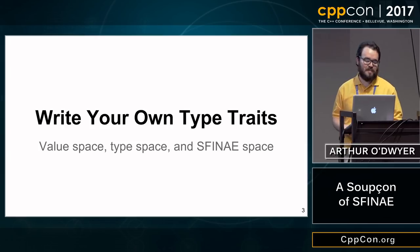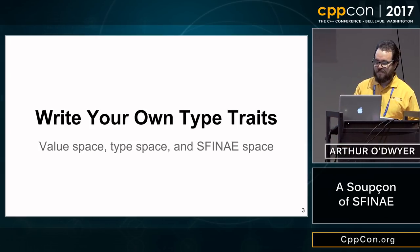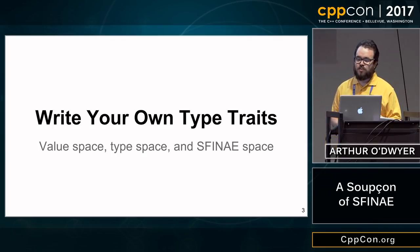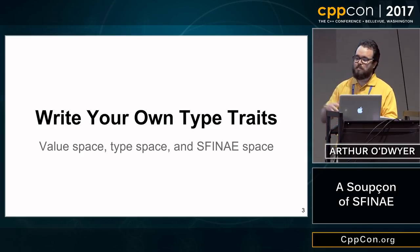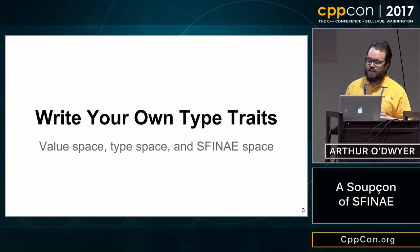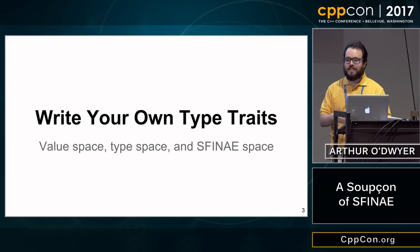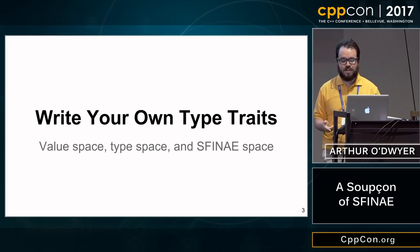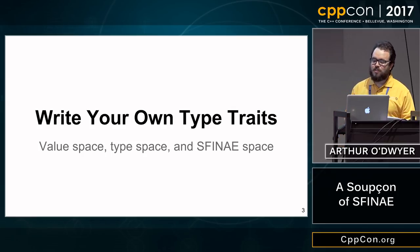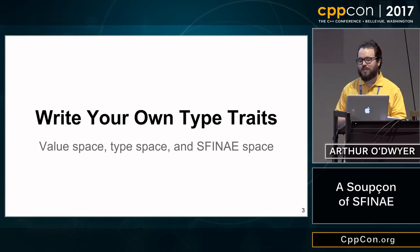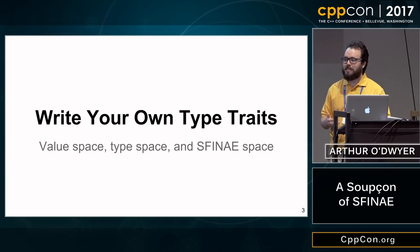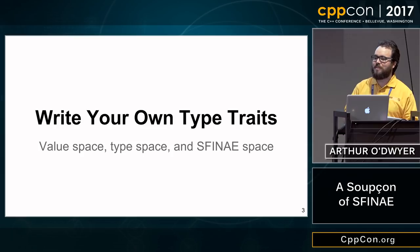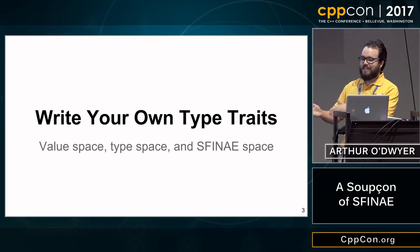Let's talk about template metaprogramming — writing our own type traits. A way I think about this is that there are three spaces in C++ that are orthogonal to each other. We have value space — values like 42, true, false, and 'hello world'. Then we have type space — int, bool, std::string, true_type, false_type. And then there's SFINAE space, where things can be well-formed or ill-formed.